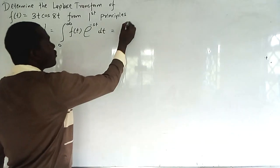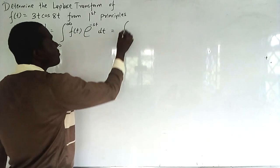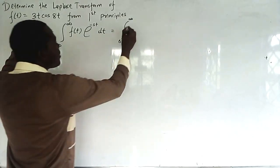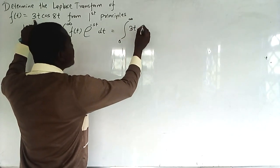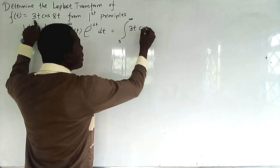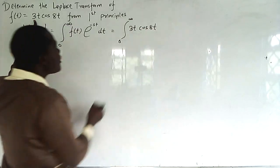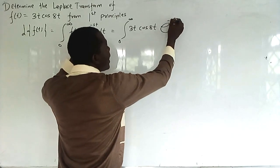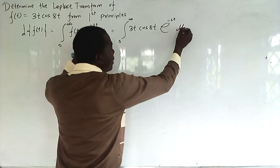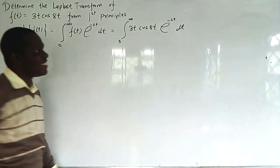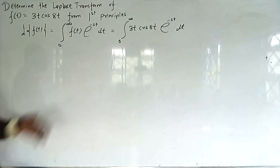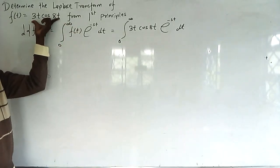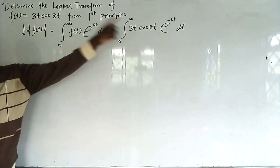So we substitute our f(t): we are integrating from 0 to infinity of 3t·cosh(t)·e^(-st) dt. We replace the value of f(t) which is given to be 3t·cosh(t).